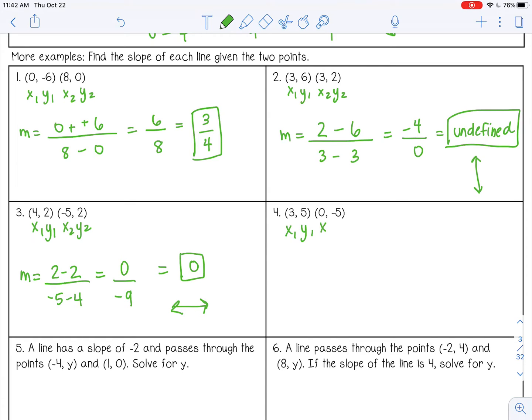And number 4. So we have negative 10 over negative 3. I'm going to leave that as an improper fraction. Negative divided by negative is a positive. So positive 10 over 3.